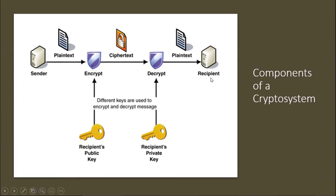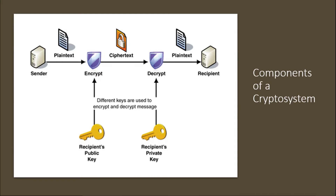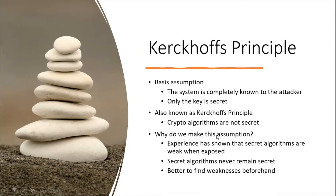Before the recipient reads it, the recipient must decrypt the message. This means the recipient must have the secret key needed to transform the ciphertext back to its plaintext. If it is a legitimate recipient intended by the sender, then somehow the key needs to be there with the recipient. How this key is transmitted from sender to recipient is another question we will see later. The recipient uses that key and a decryption algorithm to decrypt the ciphertext back to plaintext.